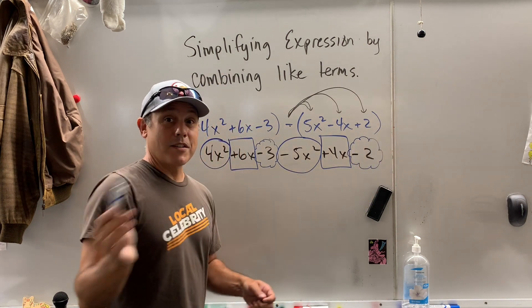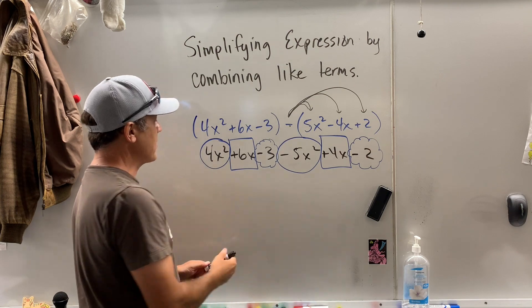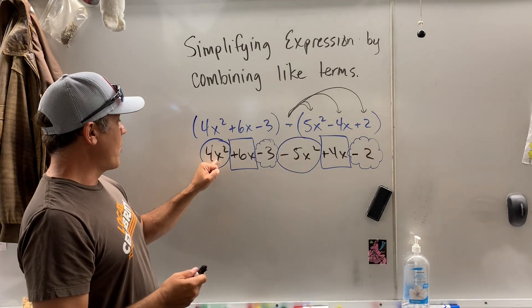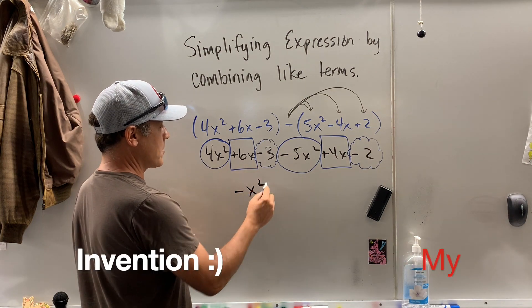So now you can go get yourself a little drink or a snack and come back. You don't have to start from scratch. Why? I'm going to combine my circles. Four x squares take away five x squares, you guess it is negative one x squared.